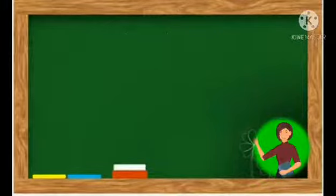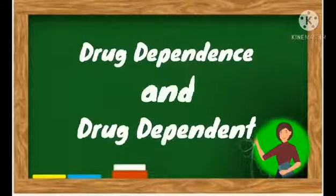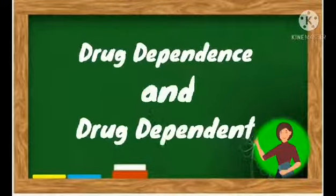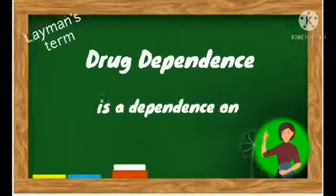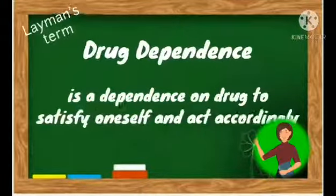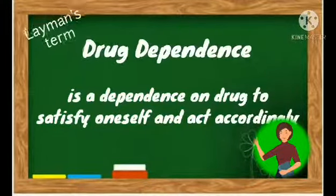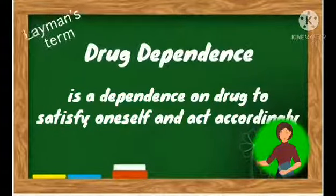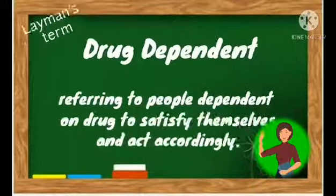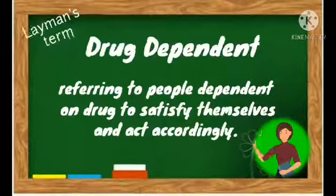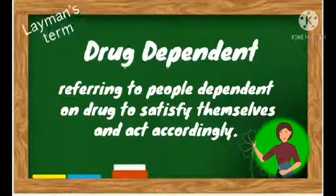Before we end this video, let us differentiate what is drug dependence and drug dependent. We have learned that drug dependence is a state of psychic or physical dependence on the use of a drug on a periodic or continuous basis. While drug dependent refers to those people who are dependent on a drug in order to satisfy themselves and act accordingly.